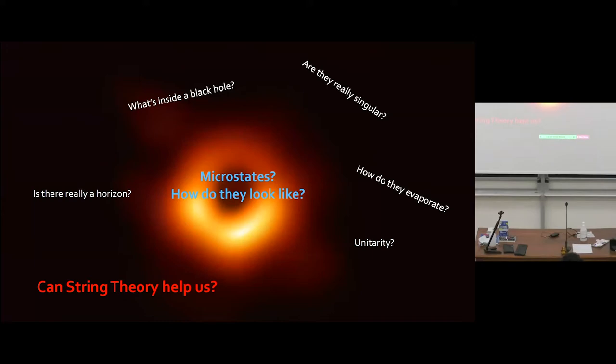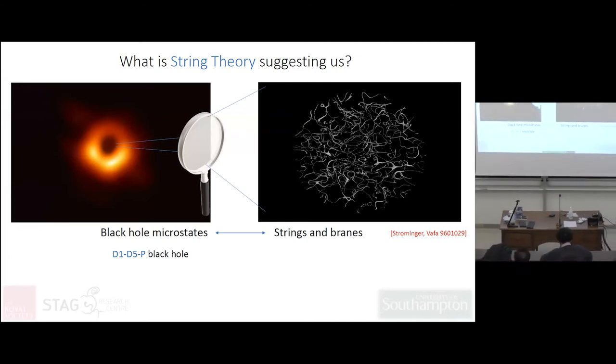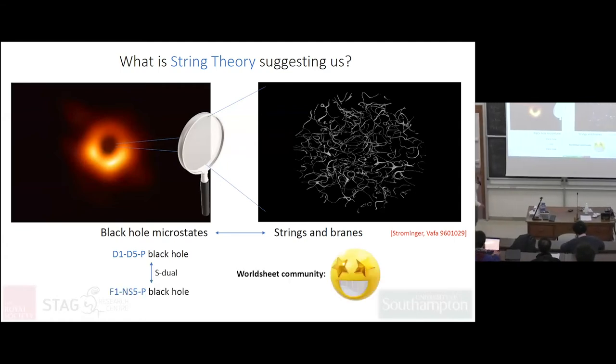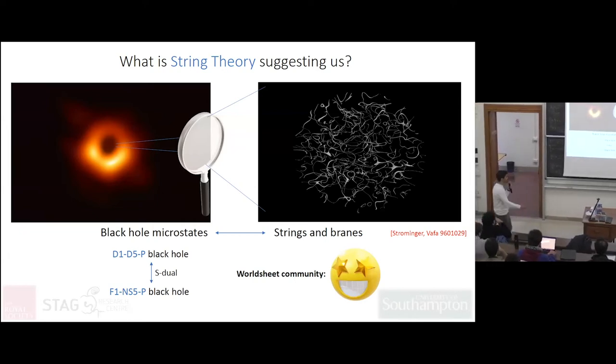String theory is suggesting the following picture: if you trust the Strominger-Vafa computation and all the other computations that followed, black hole microstates are bound states of strings and branes, possibly excited. They did this computation for the D1-D5-P black hole which contains Ramond-Ramond fluxes. But if you take an S-duality of this configuration, you end up in an F1-NS5-P black hole that does not contain Ramond-Ramond fluxes - it's purely NS-NS, and the worldsheet community is happy because it's going to be much easier to do NS-NS string theory.